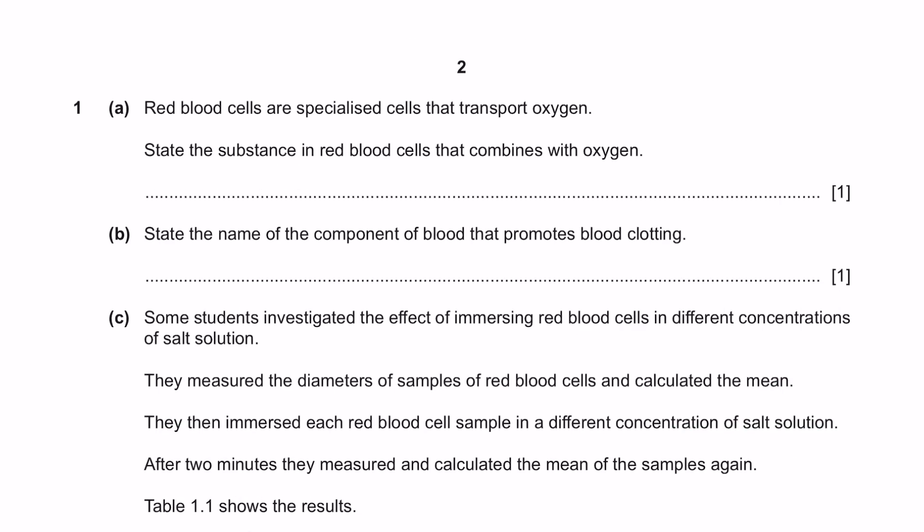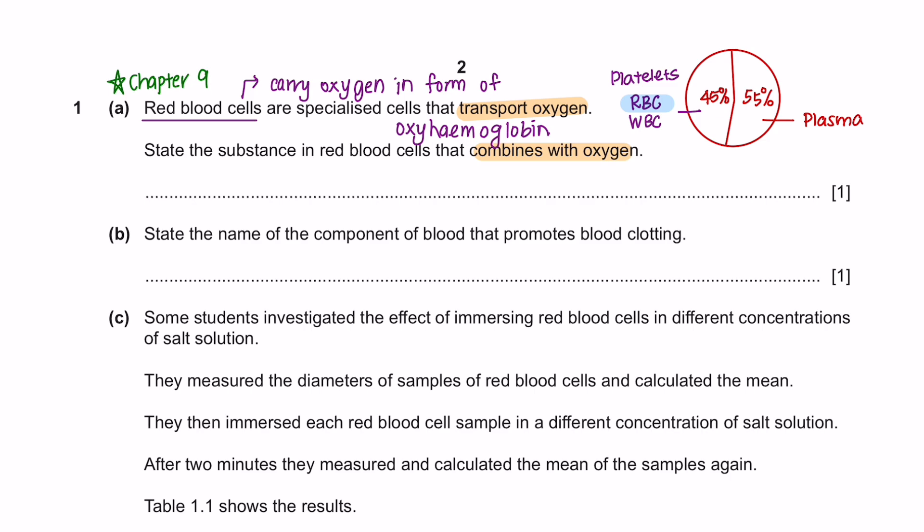Question 1, part A. Red blood cells are specialized cells that transport oxygen. State the substance in red blood cell that combines with oxygen. You will learn about the components of blood and its function in chapter 9. The blood consists of red blood cells, white blood cells, platelets, and plasma. Red blood cells carry the oxygen in the form of oxyhemoglobin. So the substance in the red blood cell is hemoglobin.